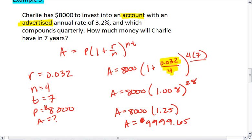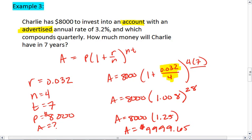What's really important for the bank problems is, first of all, identifying when you have a bank problem. And then second of all, make sure you do the order of the operations correctly. You want to divide this r over n first. Then add that value to 1. And then raise that value to your exponent.